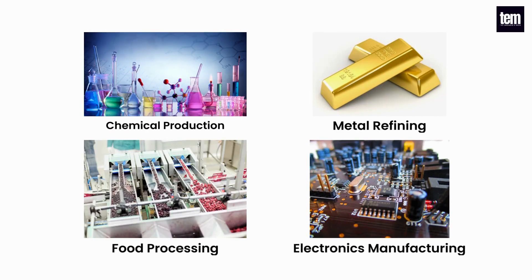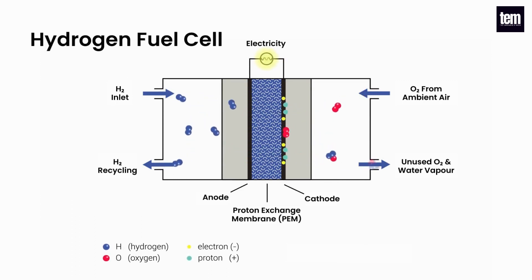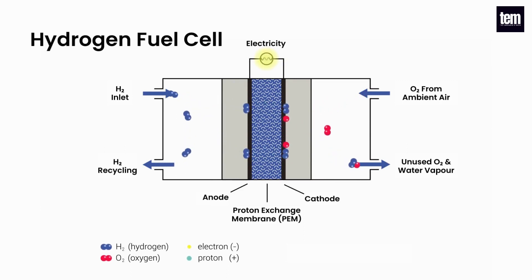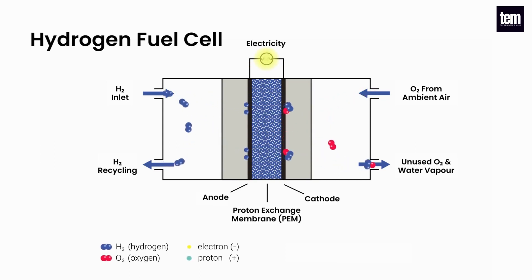Hydrogen is also used in a range of other industries, including chemical production, metal refining, food processing, and electronics manufacturing. Hydrogen can also be used for electricity production through a fuel cell. A fuel cell is an electrochemical cell which produces electricity by converting chemical energy into electrical energy. When hydrogen is combined with oxygen in a fuel cell, it produces heat and electricity, with only water vapor as a byproduct.